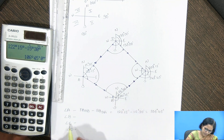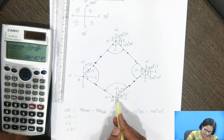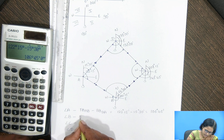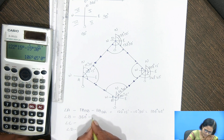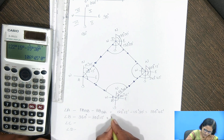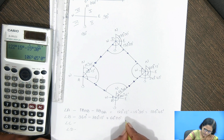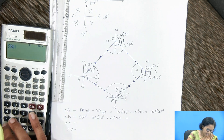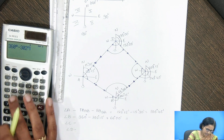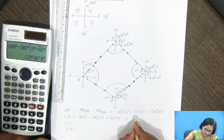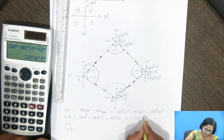For angle B, the whole circle is 360 degrees. We subtract 360 degrees minus 302 degrees 15 minutes (the back bearing of B) and then add 66 degrees (the fore bearing of BC): 360 degrees minus 302 degrees 15 minutes plus 66 degrees equals 123 degrees 45 minutes.